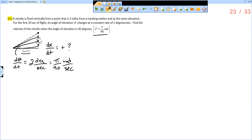So now how are our variables related, theta and x? Well, they're related by a tangent ratio. So the tangent of theta is equal to x over 5.